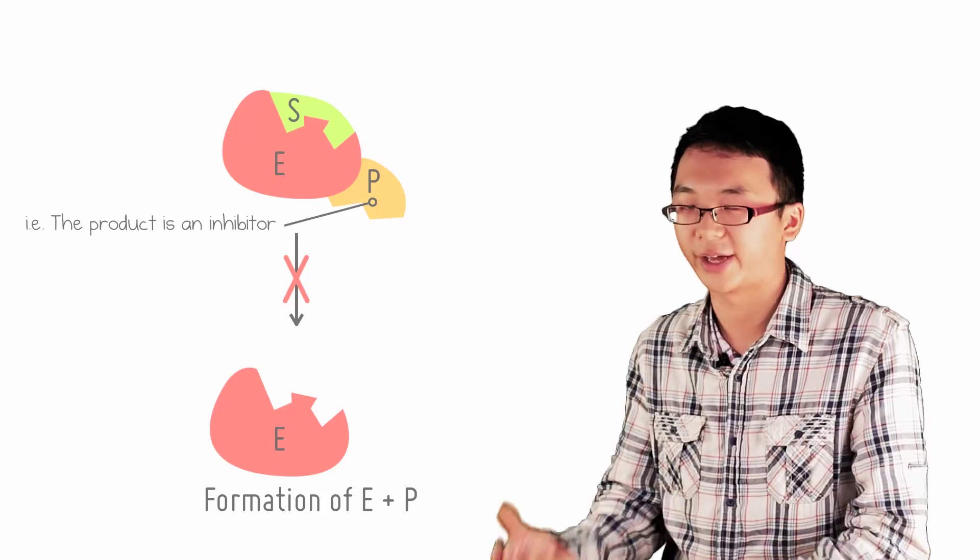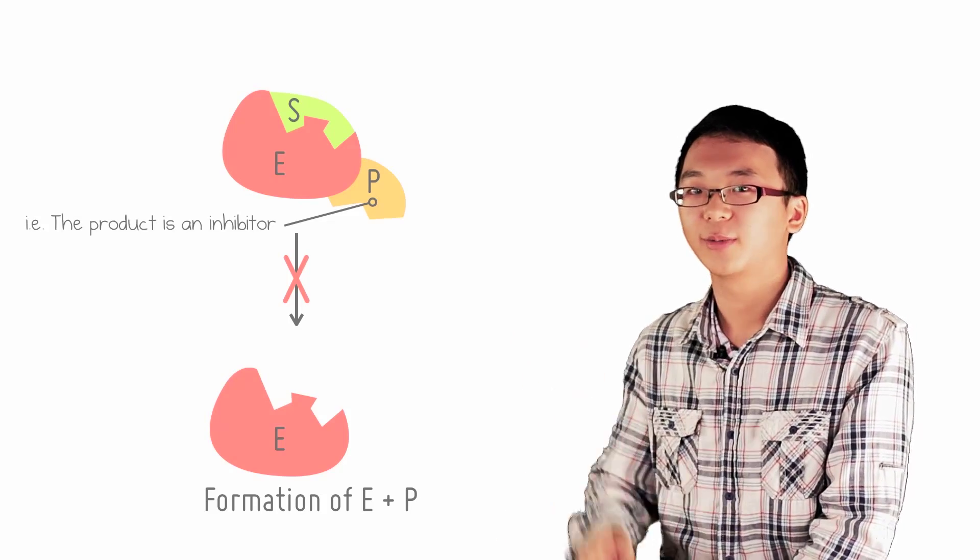thus reducing the rate of reaction. So in short, enzyme makes product, product inhibits enzyme.